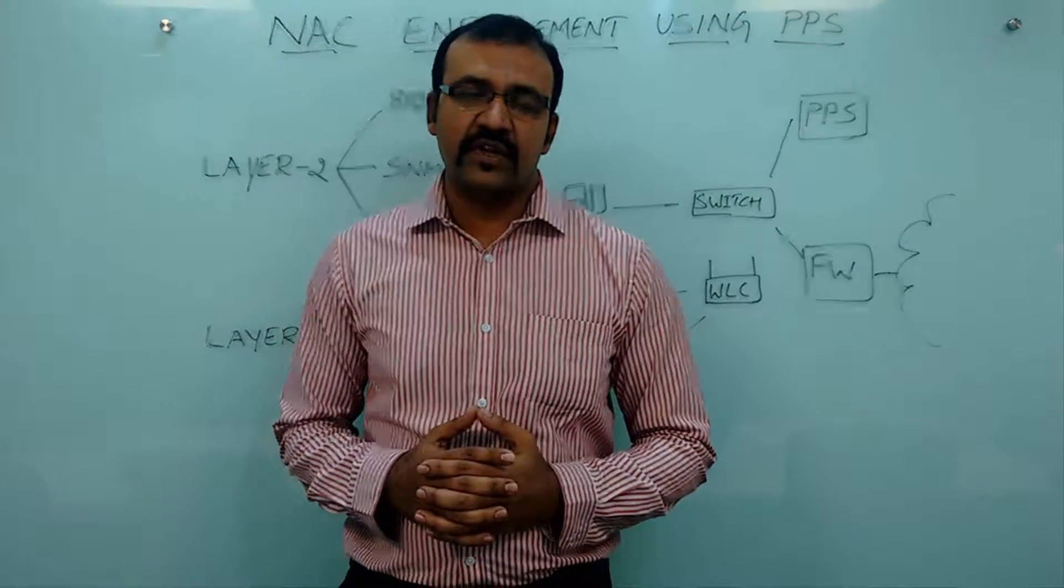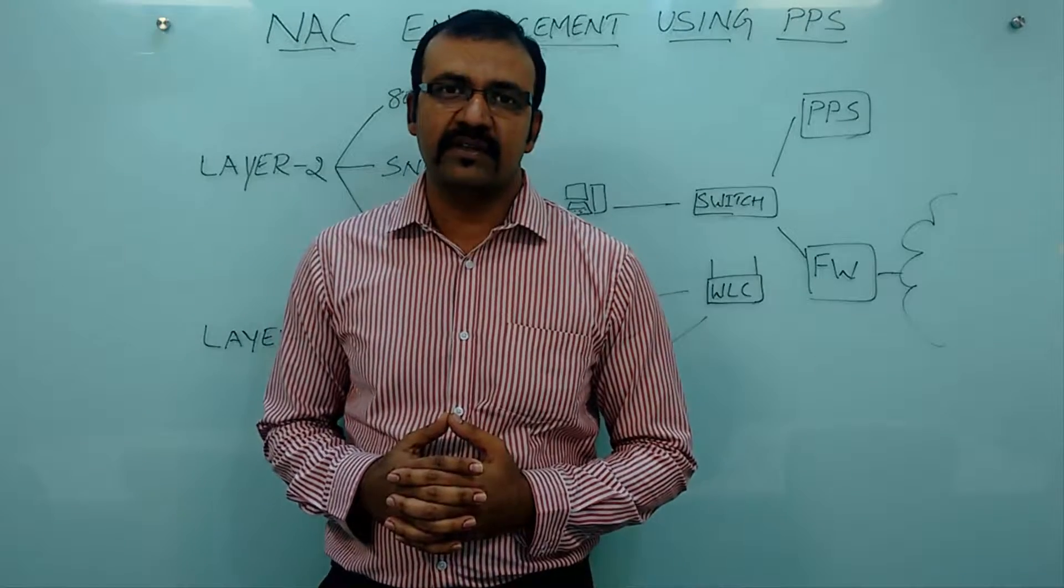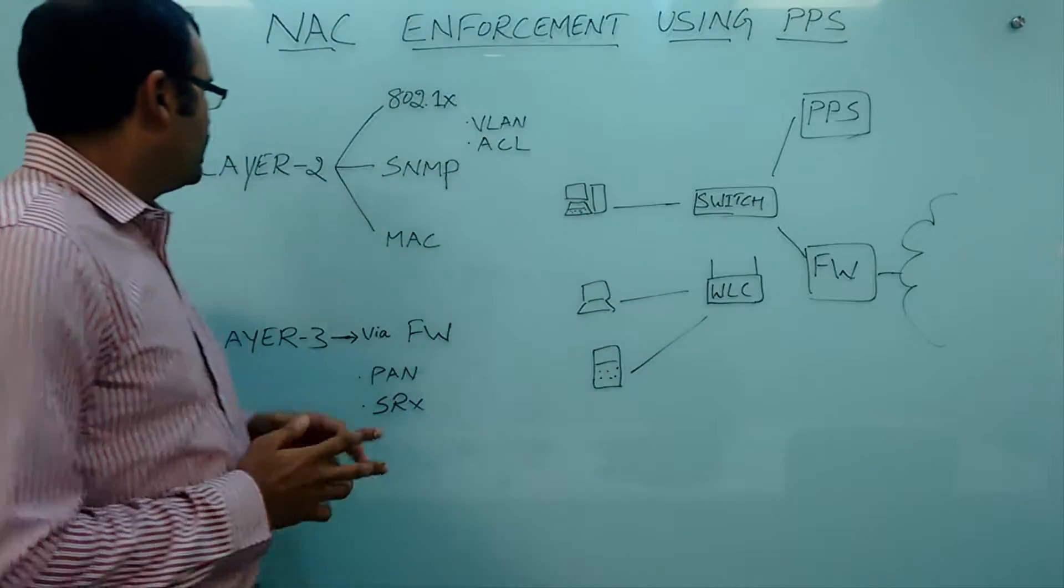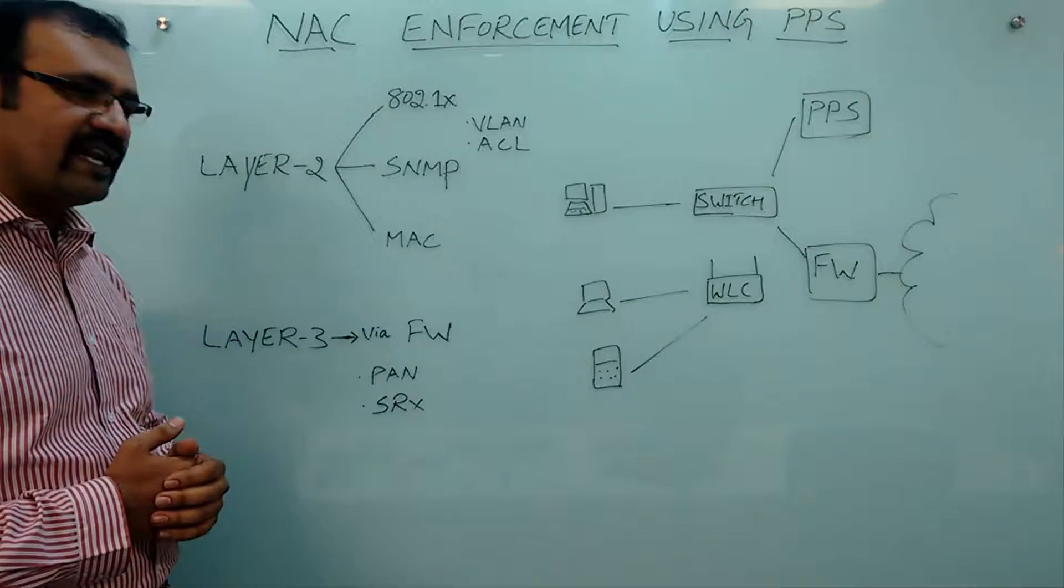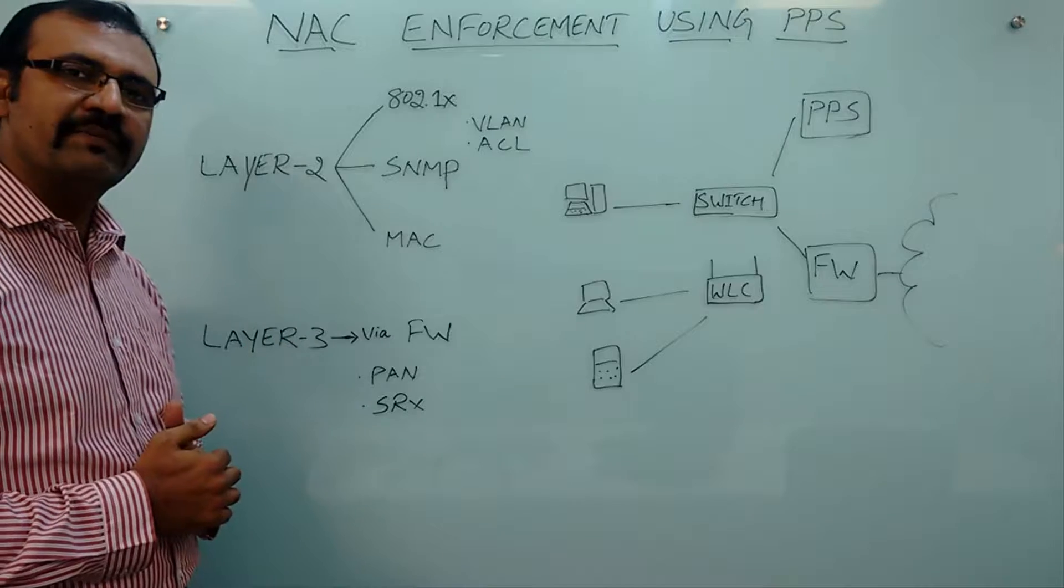Pulse Policy Secure supports mainly two enforcement methods: layer 2 and layer 3. Let's see first the layer 2 enforcement method.